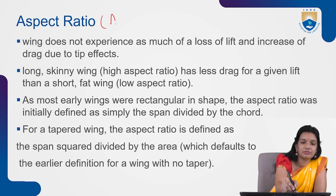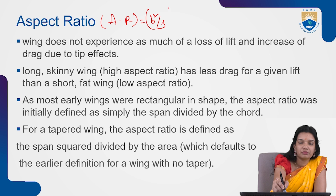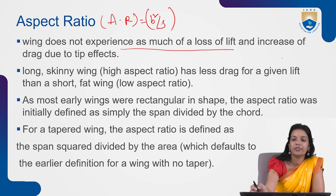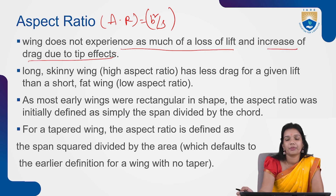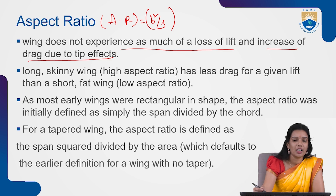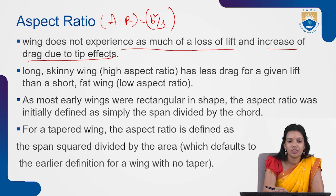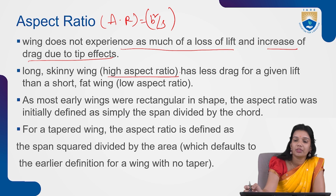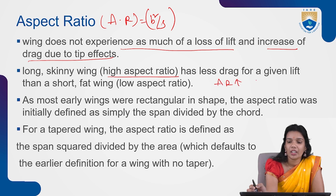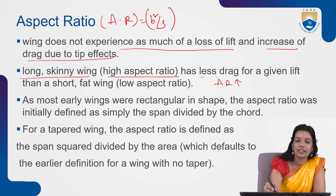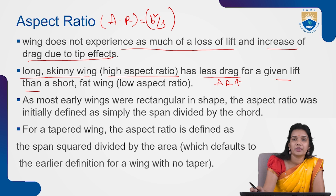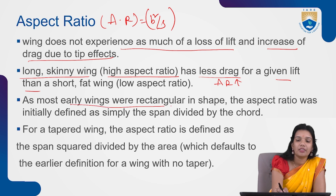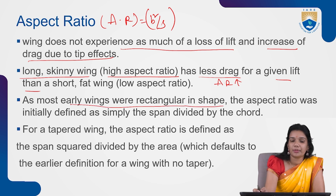Next is aspect ratio. A wing with a high aspect ratio does not experience as much loss of lift and increase of drag due to tip effects. If the aspect ratio is very high, you have a very long and skinny wing which has lesser drag for a given lift, compared to a shorter or fatter wing, which is a low aspect ratio wing.